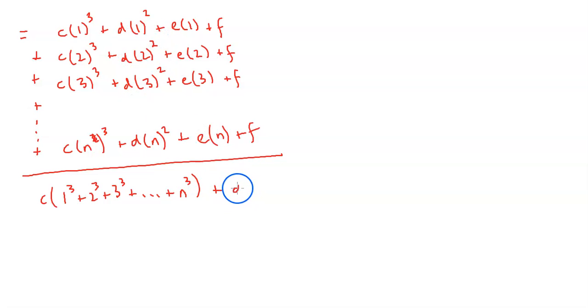And then over here we're clearly going to have d times 1 squared plus 2 squared plus 3 squared all the way up to n squared. And then clearly it's going to be e times 1 plus 2 plus 3 all the way up to n.